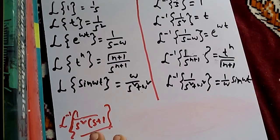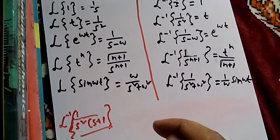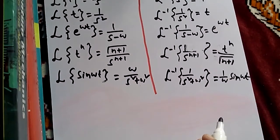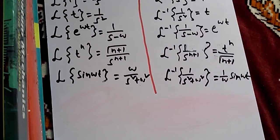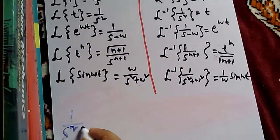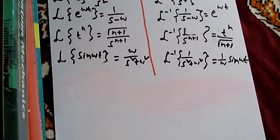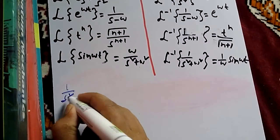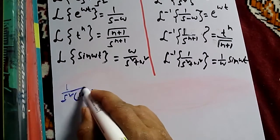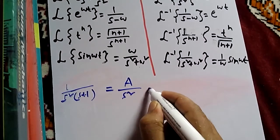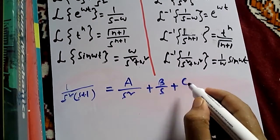To solve inverse Laplace of 1 by s squared into s plus 1, we first take the function and apply the partial fraction method to segregate it into different terms. Each term will then be inverse Laplace transformed individually. In partial fraction form, we write 1 by s squared into s plus 1 as A by s squared plus B by s plus C by s plus 1.